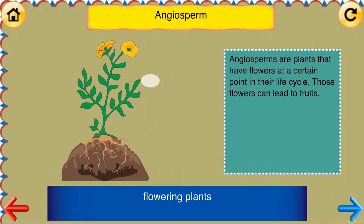Angiosperm. Flowering plants. Angiosperms are plants that have flowers at a certain point in their life cycle. Those flowers can lead to fruits.